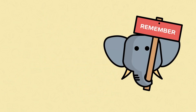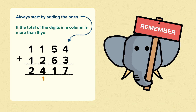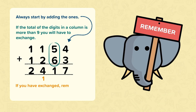Remember: always start by adding the ones. If the total of the digits in the column is more than 9, you will have to exchange. And if you have exchanged, remember to add the extra one in the next column.